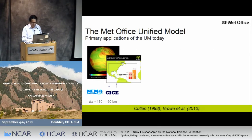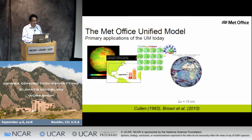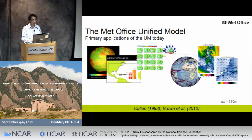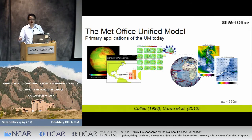We have many different applications: global modeling, ensembles, seasonal prediction, short-range NWP, and a model over London at 300-meter resolution. Everything at roughly 10-kilometer grid spacing or coarser has model science developed for global atmosphere, land, ocean, and sea ice. We don't tend to run anything in the 5–10 kilometer gray zone range, and then everything convection-permitting has another dedicated set of science development.